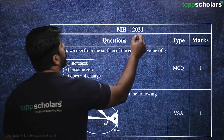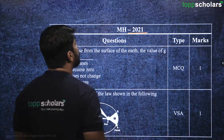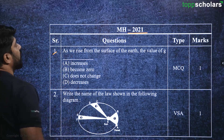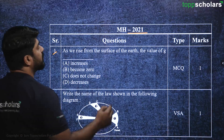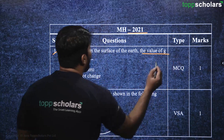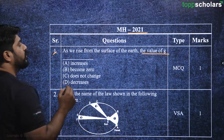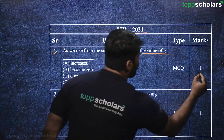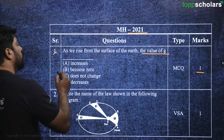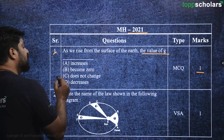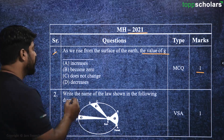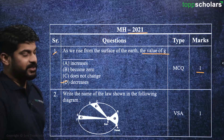Moving on to the next question from the year 2021: as we rise from the surface of the earth, the value of g — what happens? This is an MCQ for one mark. The options are: increases, becomes 0, does not change, or decreases. As we know, it basically decreases.